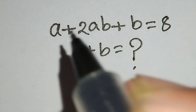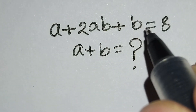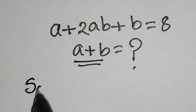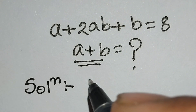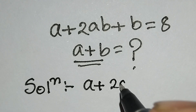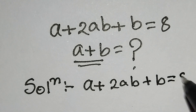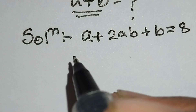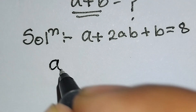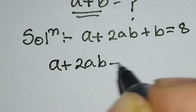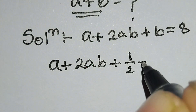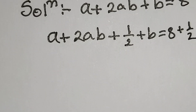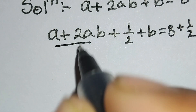Hello, this is a nice math problem. A plus 2ab plus b is equal to 8, and we have to find the value of a plus b. Let's start the solution. The given equation is a + 2ab + b = 8. We will add 1/2 to both sides, so we can write a + 2ab + 1/2 + b = 8 + 1/2.